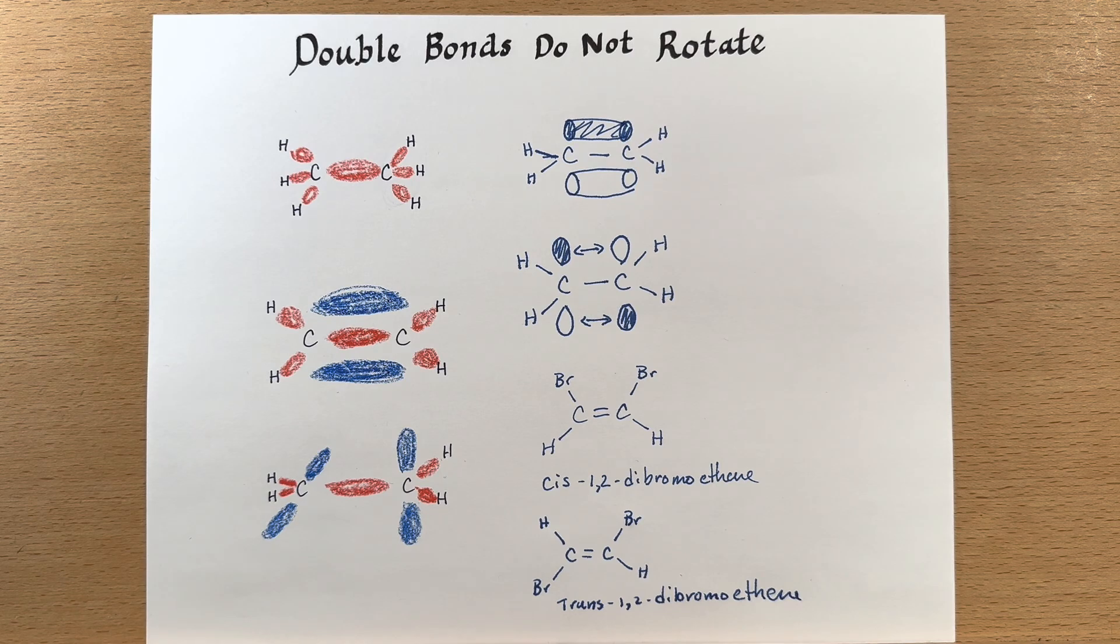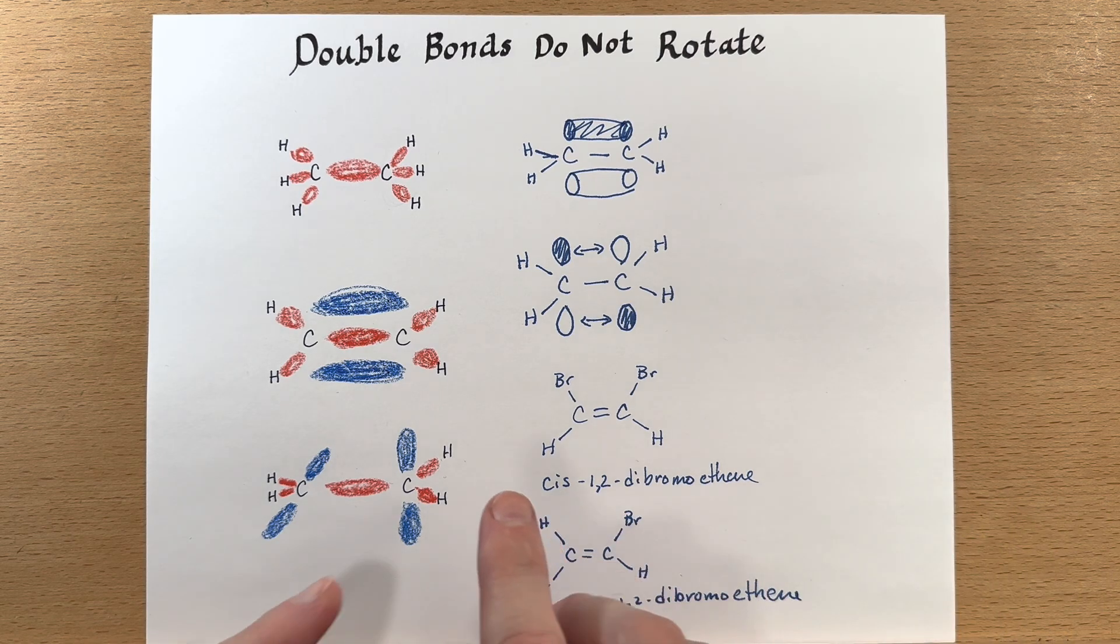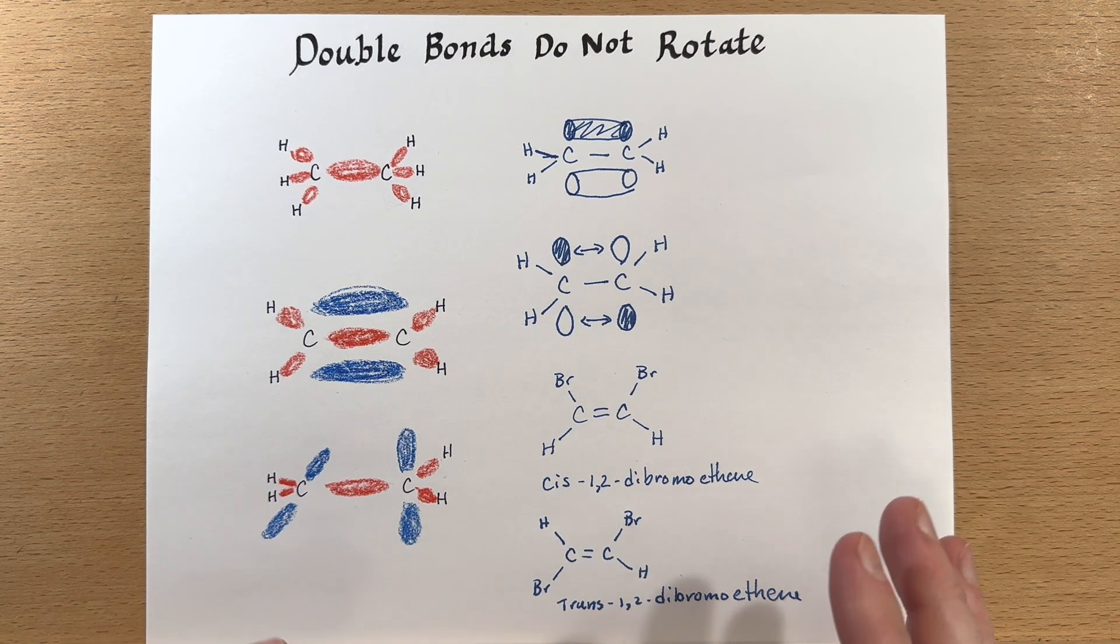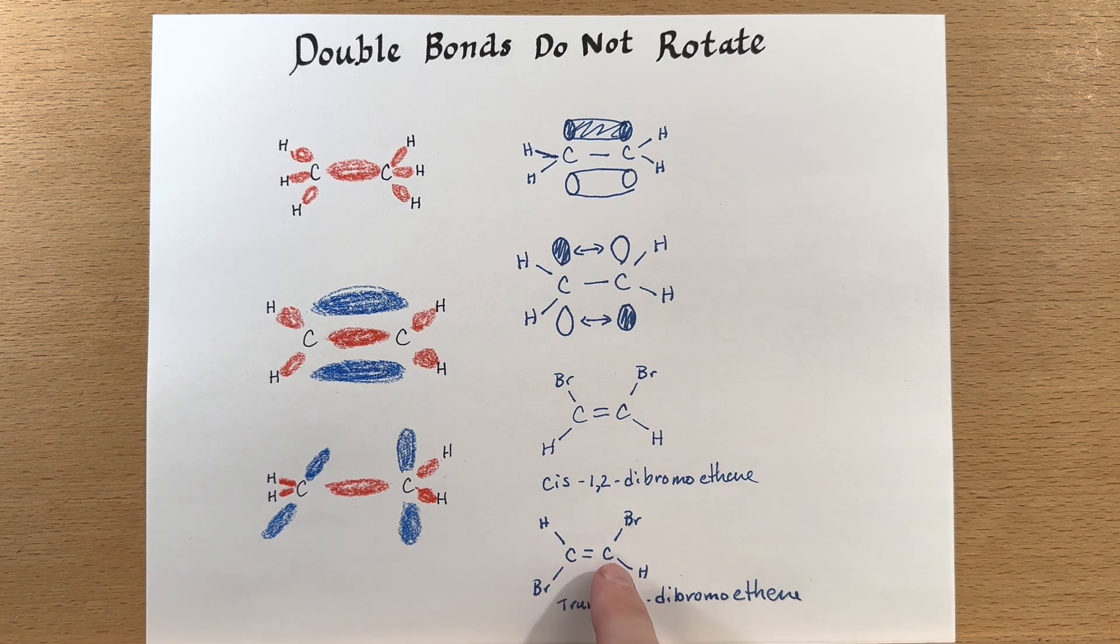Other times where you may have encountered this type of nomenclature is in fats. So you've probably heard of trans fats. And in that case, the bonds, there's some double bonds in the fatty chain. And some of those would be in the trans configuration.